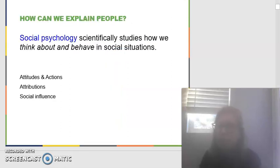When we talk about social psychology, we're going to be talking about attitudes and actions, attributions, that's why we judge things and rationale for things, and then we're going to talk quite a bit about social influence in this chapter. If you like this chapter, you could take a whole course on social psychology.